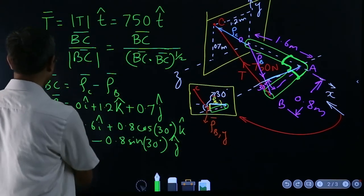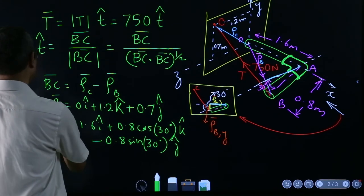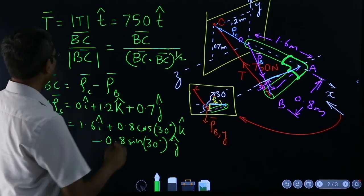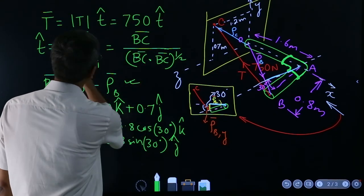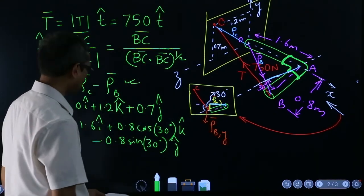Now you have got everything. ρB is known as a vector, ρC is known as a vector. If you just substitute them here you get BC as a vector and substitute here to get the thing.